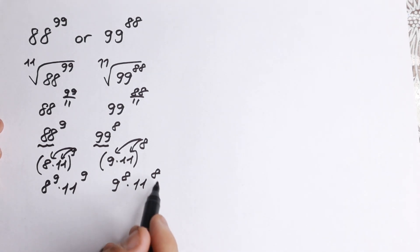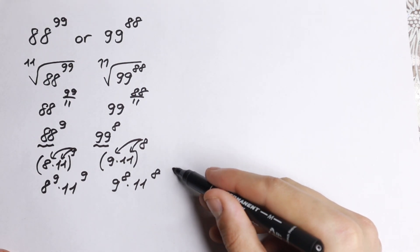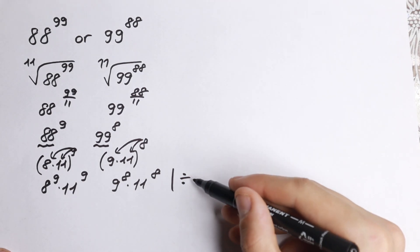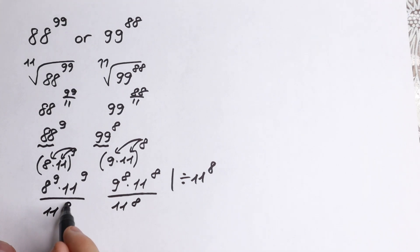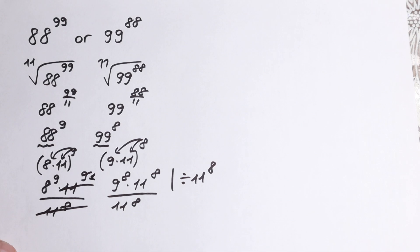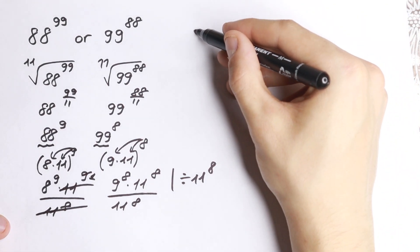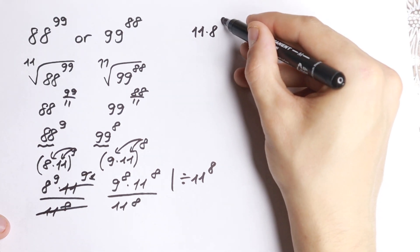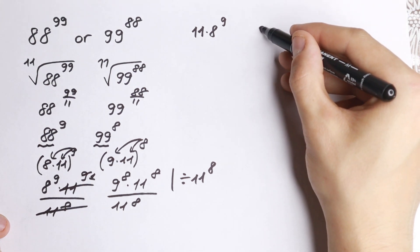As you can see, on the right side we multiply by 11 eight times, and on the left side we multiply by 11 nine times. So if we divide both sides by 11 to the 8th power, the right side cancels completely, and the left side still has one factor of 11 remaining. As a result, on the left hand side we have 11 times 8 to the 9th power, and on the right hand side we have 9 to the 8th power.